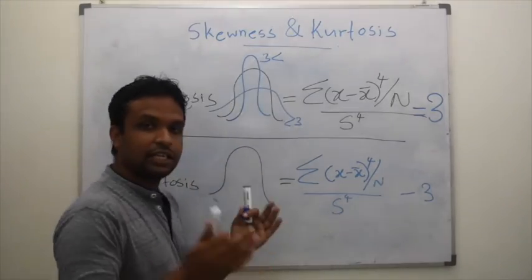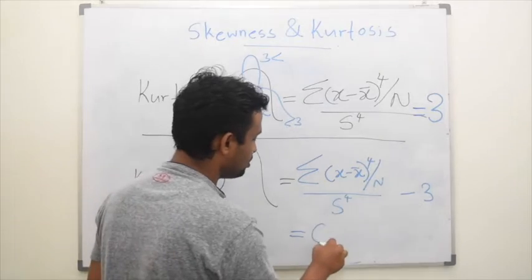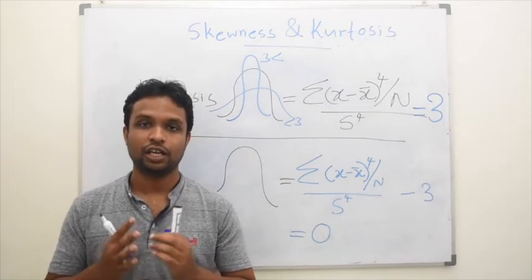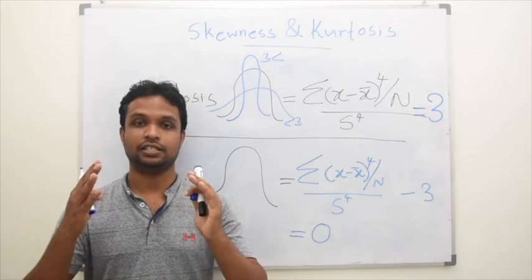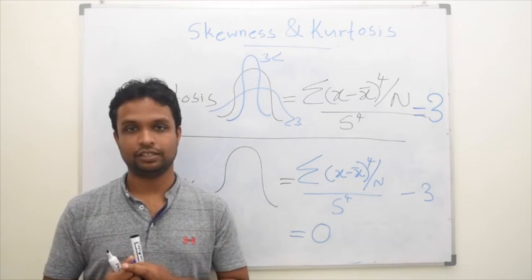So then the kurtosis of a normal distribution will equal 0. Now we can easily identify: if kurtosis value is positive, it is leptokurtic. If it is negative, it is platykurtic.